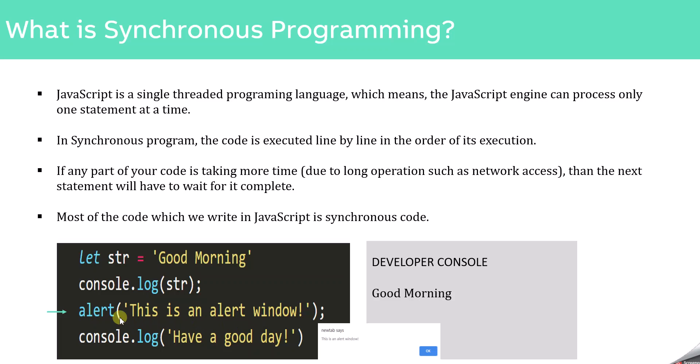A synchronous program is blocking. If any part of your code is taking long time in its execution, then the next statement will have to wait for its execution. So here the alert function is taking long time in its execution, and that's why the console.log statement will have to wait. When we click on the OK button, the alert window disappears and the execution of the alert function is complete, and only then the next console.log statement will be executed.